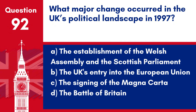Question 92. What major change occurred in the UK's political landscape in 1997? a. The establishment of the Welsh Assembly and the Scottish Parliament. b. The UK's entry into the European Union. c. The signing of the Magna Carta. d. The Battle of Britain.